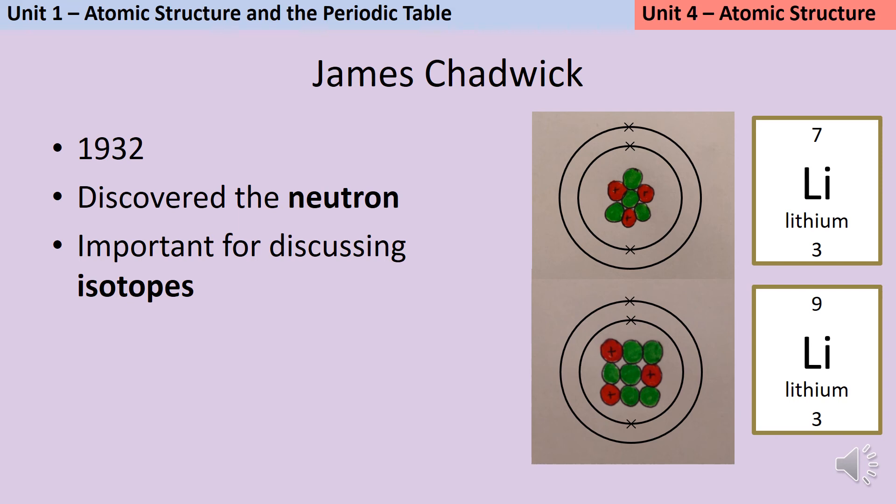But then they started to find data they couldn't explain using this model. If a proton has a mass of one and an electron has a mass so small you don't need to count it, then every element should have a relative atomic mass that is a whole number. But some elements, when weighed, had masses that weren't whole numbers, and there was no way of explaining this because you couldn't have half a proton.